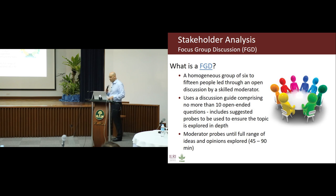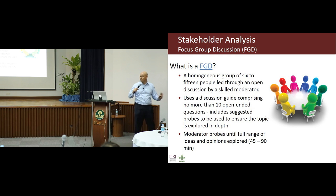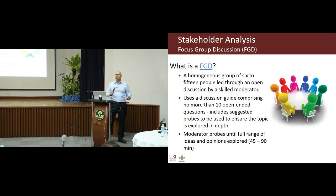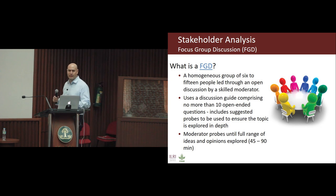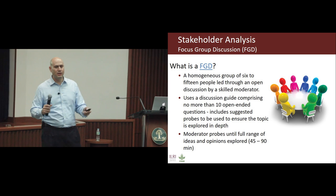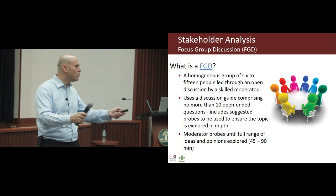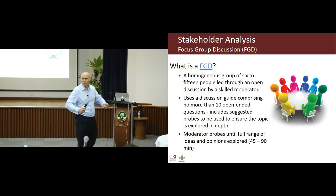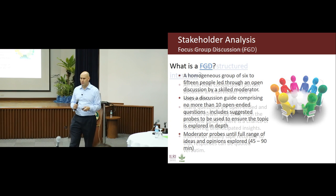A focus group discussion (FGD) involves a homogenous group of six to fifteen people led through a skilled moderator. It uses discussion guides with open-ended questions to get information from the entire group about priorities. FGDs usually last until all ideas seem to come up and start getting repeated — typically 45 to 90 minutes. They can take place in any setting, from private sector product testing to farmers sitting behind a tree in a village.